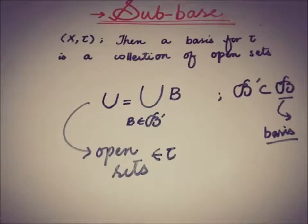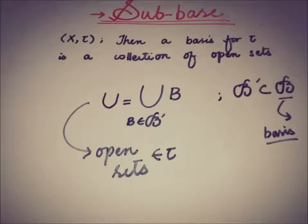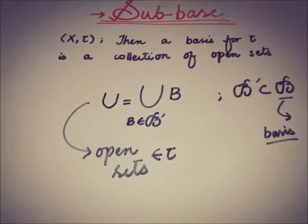So again, if X and tau is a topological space, then a basis for that topology is a collection of open sets such that every open set can be written as the union of a sub-collection of open sets from B. This is the definition of a basis of a topology.